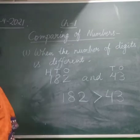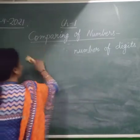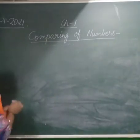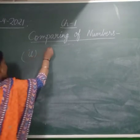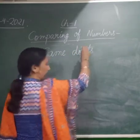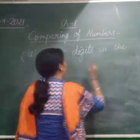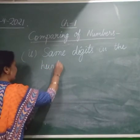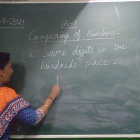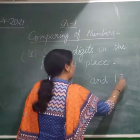Now let's take the next case: when the digits are the same at 100's place. For example, 151 and 172.